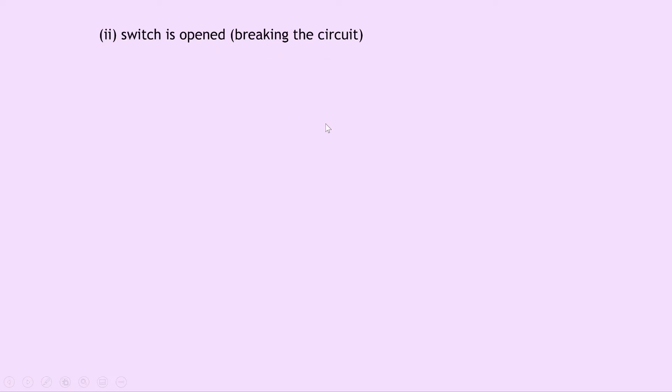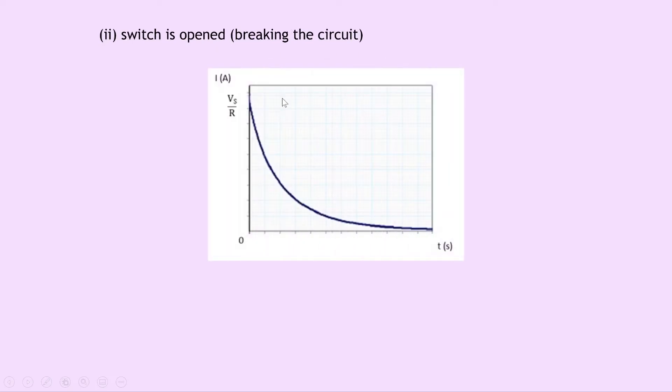Part D wants us to sketch how the current in the circuit varies with time when the switch is opened, i.e. breaking the circuit. Well when the switch is opened, the opposite thing happens — we get this decay of current from a maximum value down to 0 amps. And again our maximum current value is set by Vs divided by R, the supply voltage divided by the resistance.